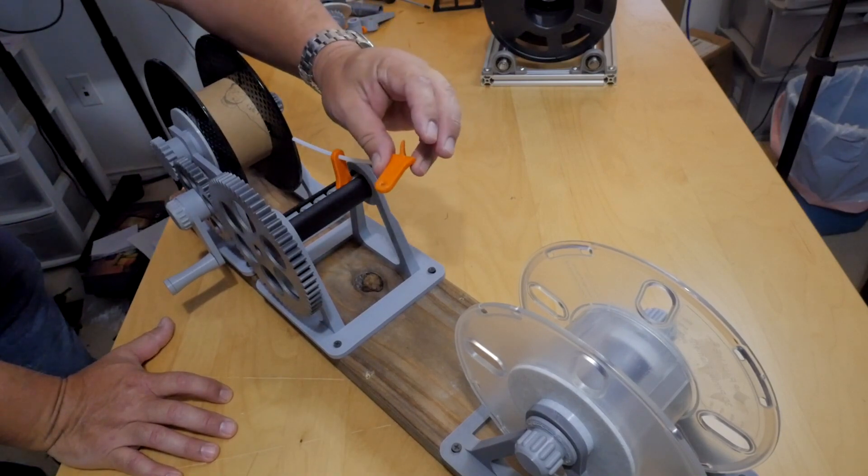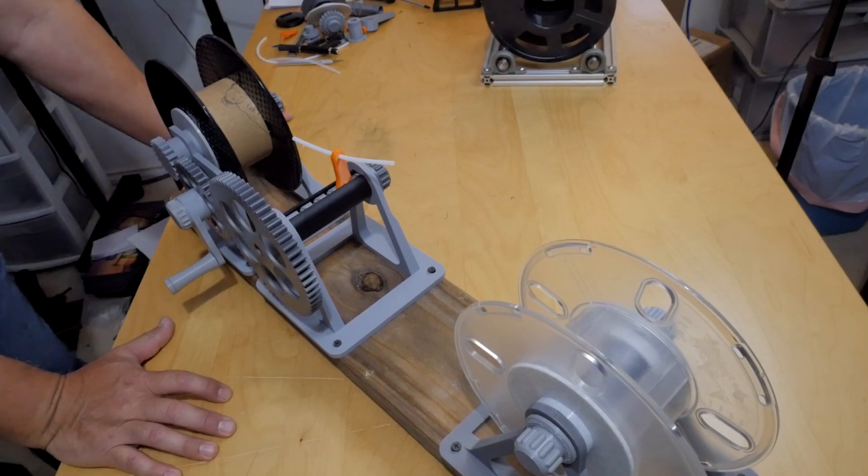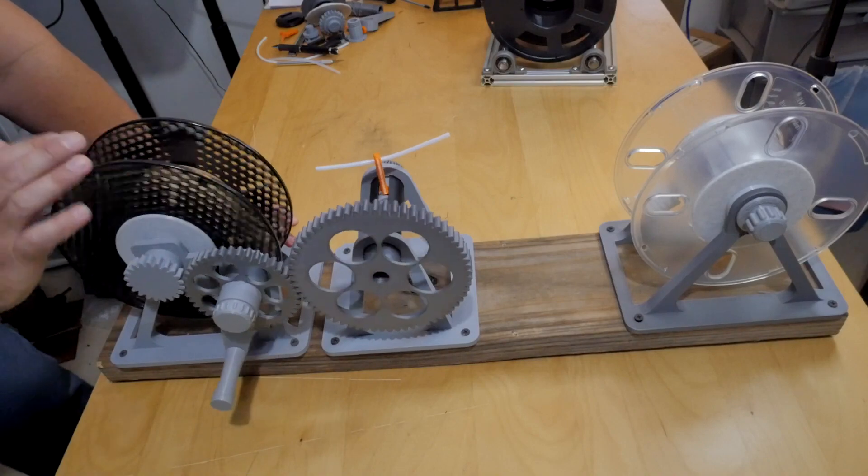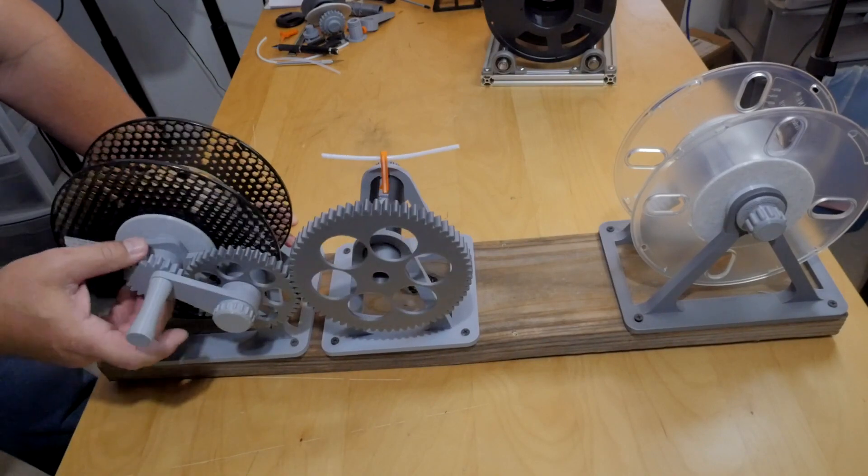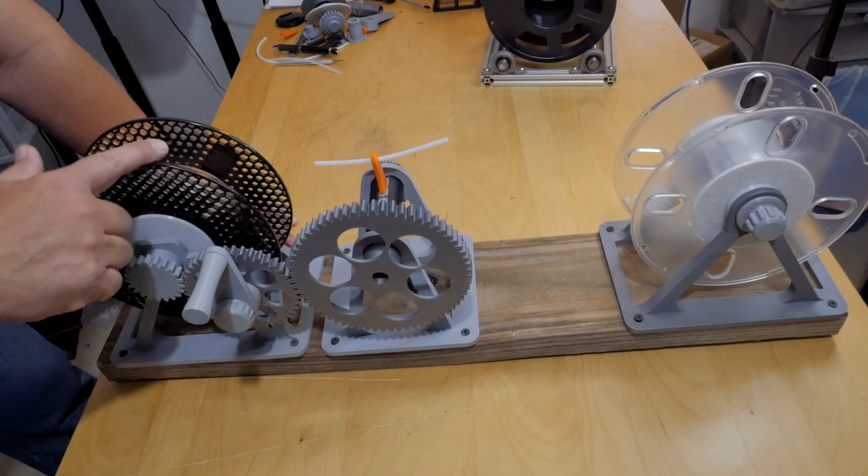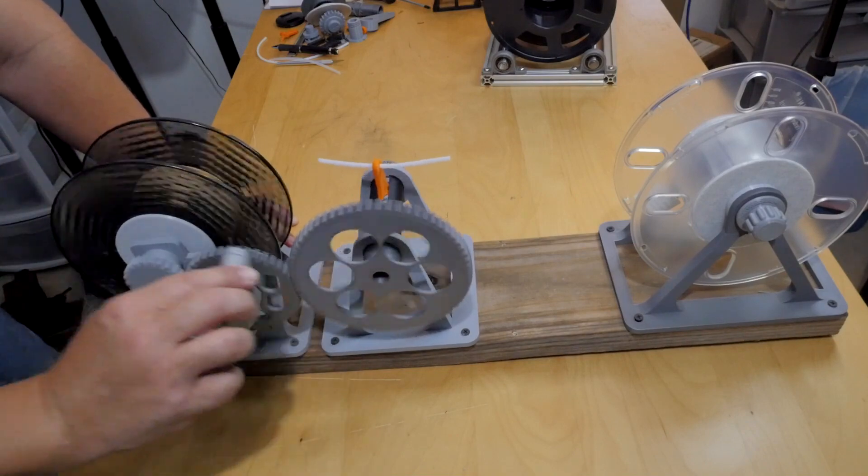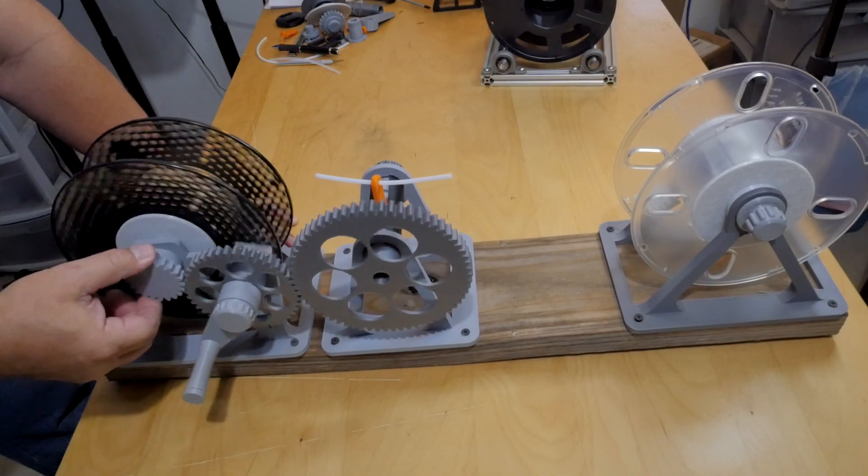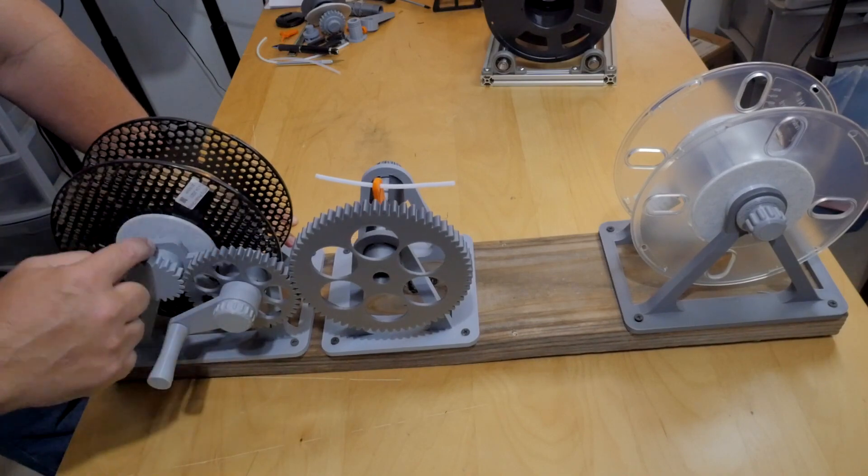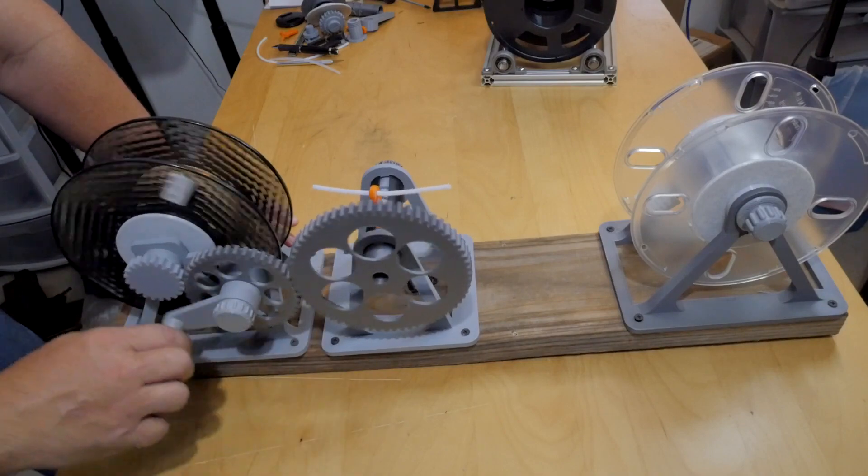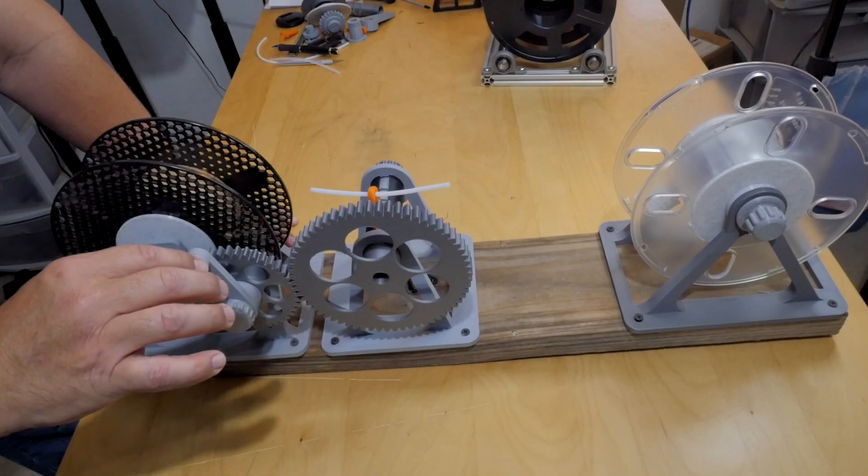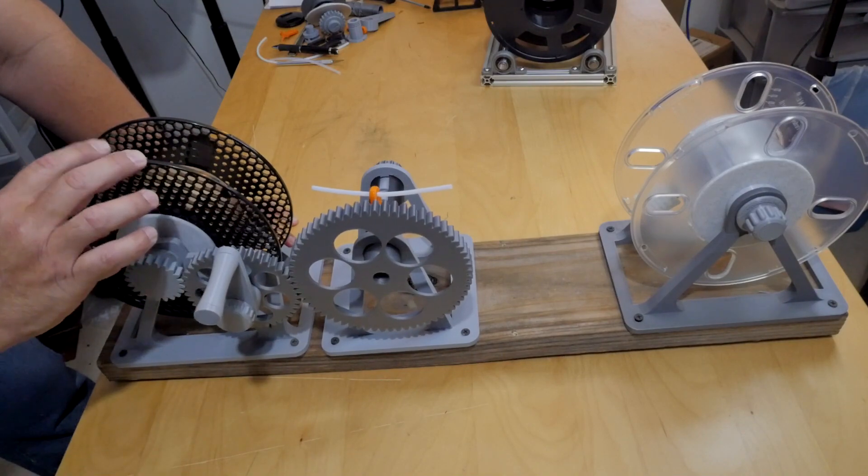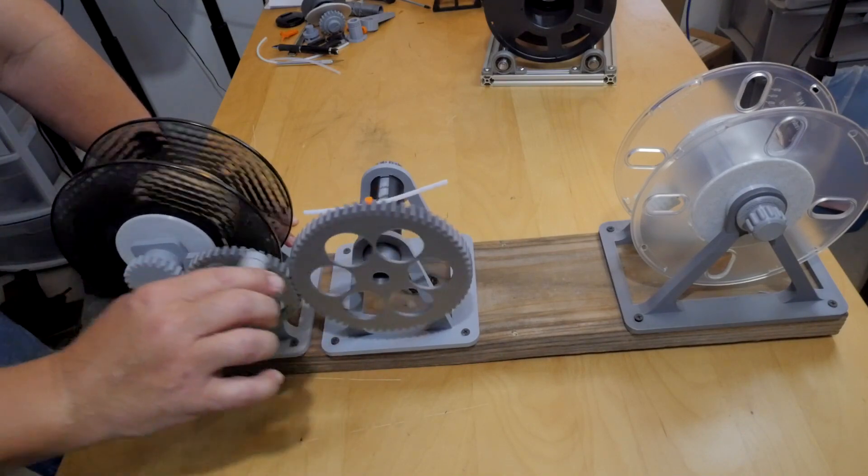Looking at this, you can see here's the driven gear. This is where the spool is going to go. By cranking on this handle clockwise, you can see the spool is going counterclockwise, and it's a two-to-one ratio. So every one turn of the handle is two turns on the driven spool here.